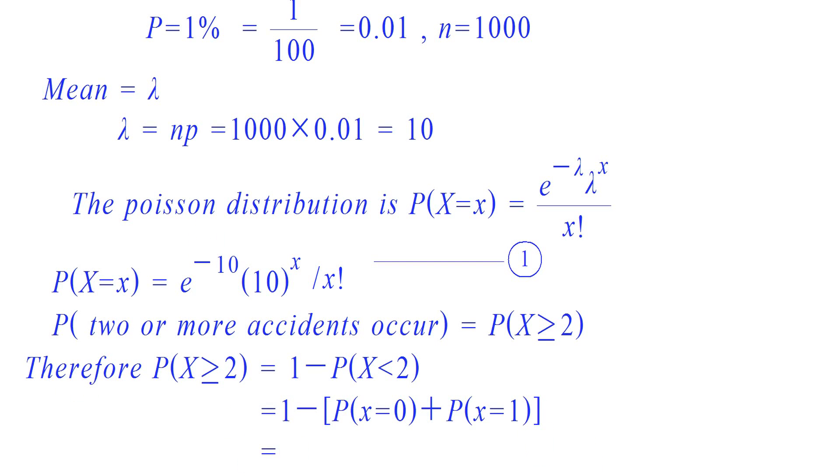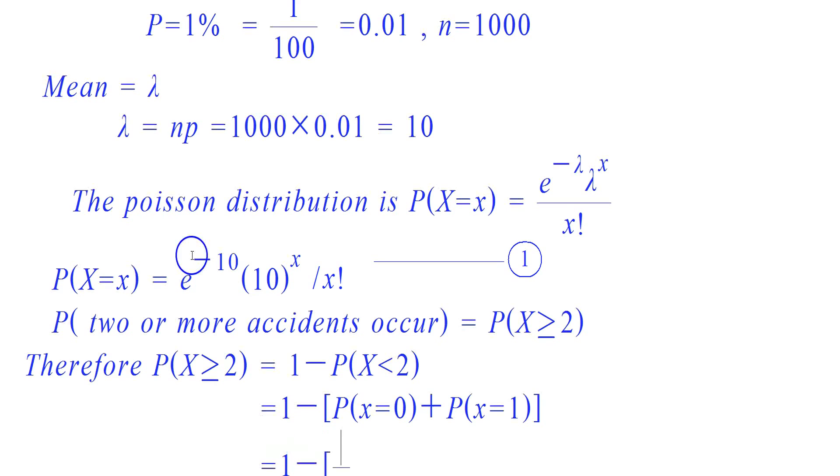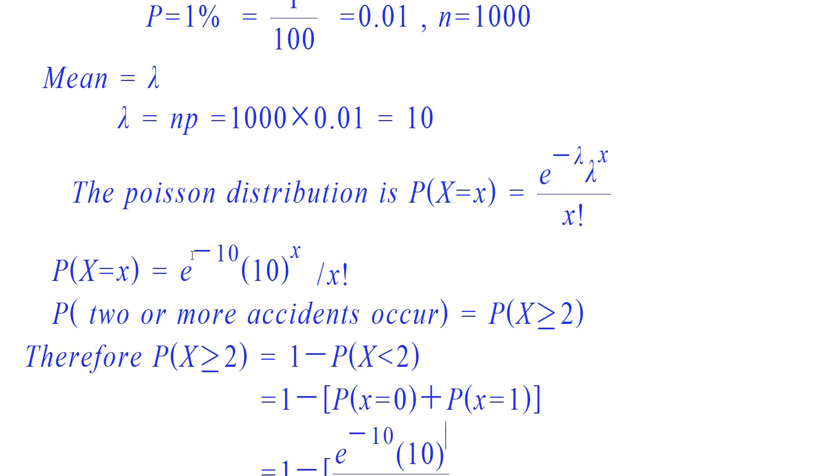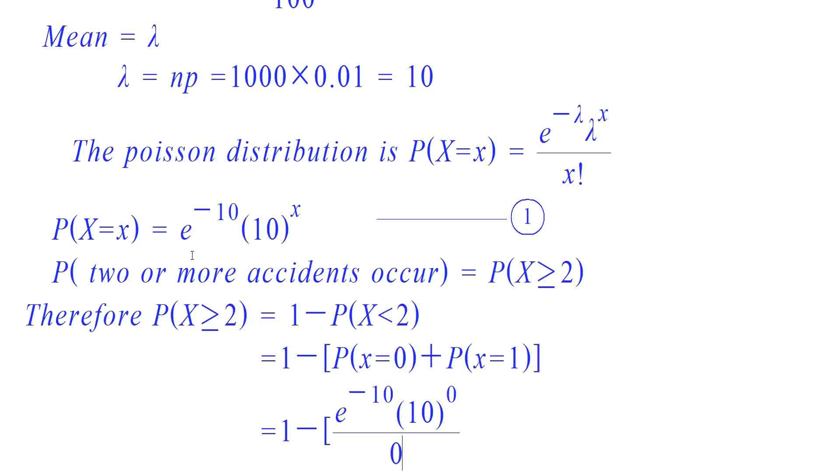That is equal to 1 minus, to find the probability of X equals 0, we just put X equals 0 and lambda equals 10 in equation 1. Then we get e raised to minus 10 times 10 raised to 0 by 0 factorial plus...